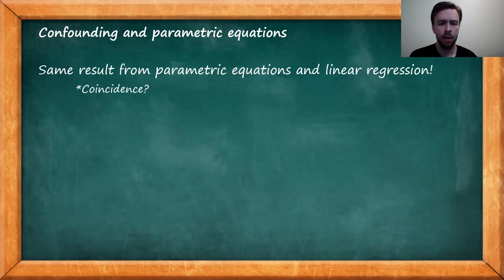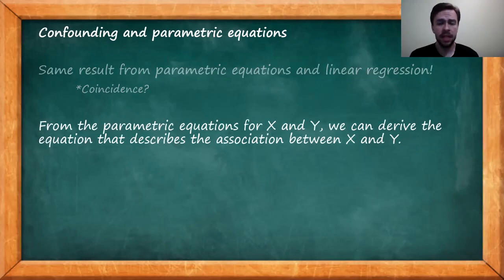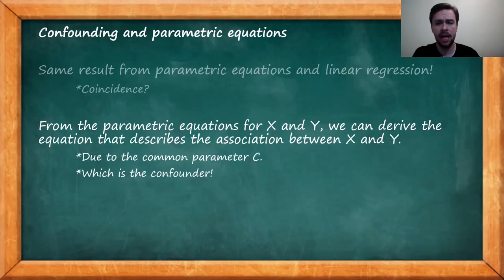Notice that the result from our parametric equation derivation was the same result that we obtained through linear regression. Is this a coincidence? Of course not. The thing is that from the parametric equations for X and Y, we can derive the equation that describes the association between X and Y because both X and Y have a common parameter C and by the equality C equals C, we can then arrive at an equation that relates X and Y directly. Therefore, X and Y have a common parameter C, which is our confounder, and this is precisely the reason why we can arrive at an equation that relates both variables.